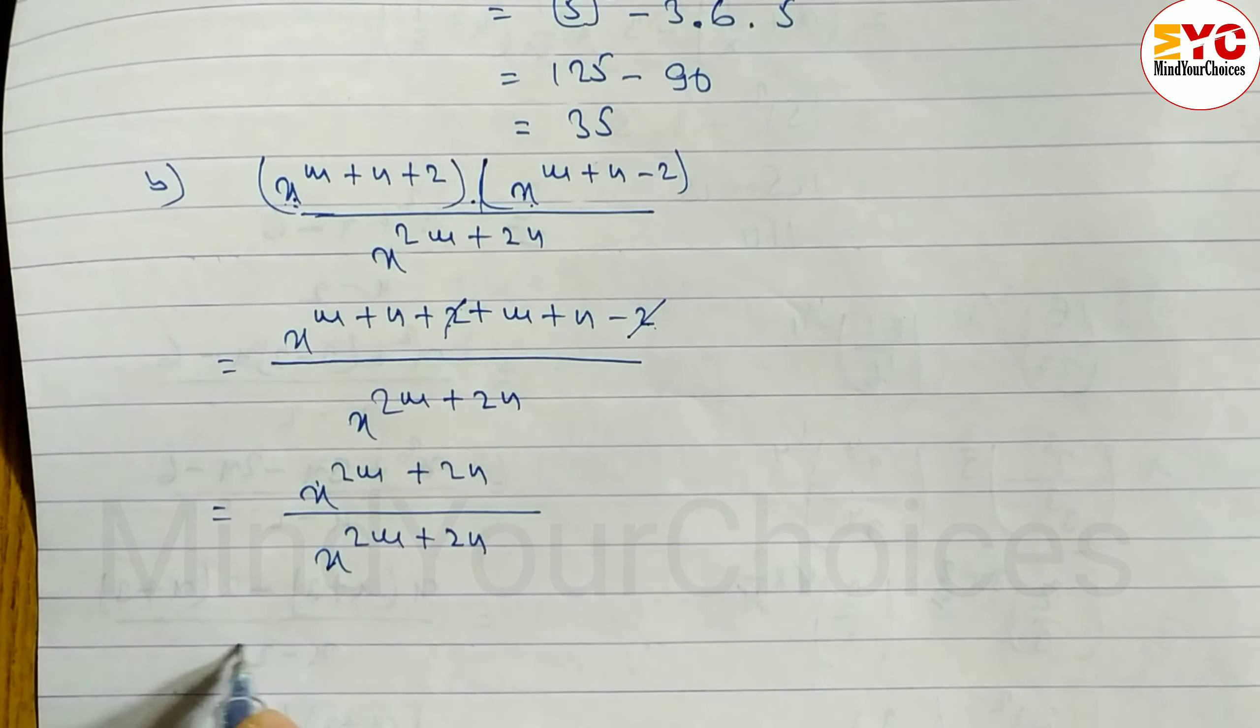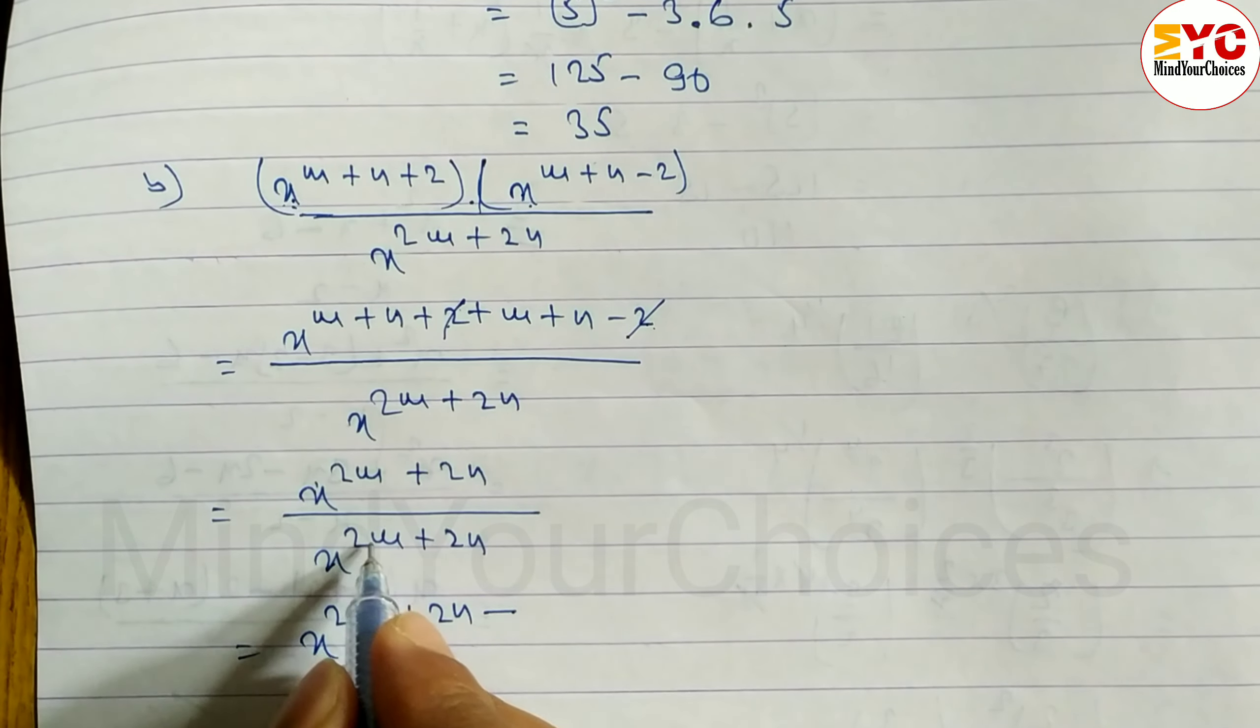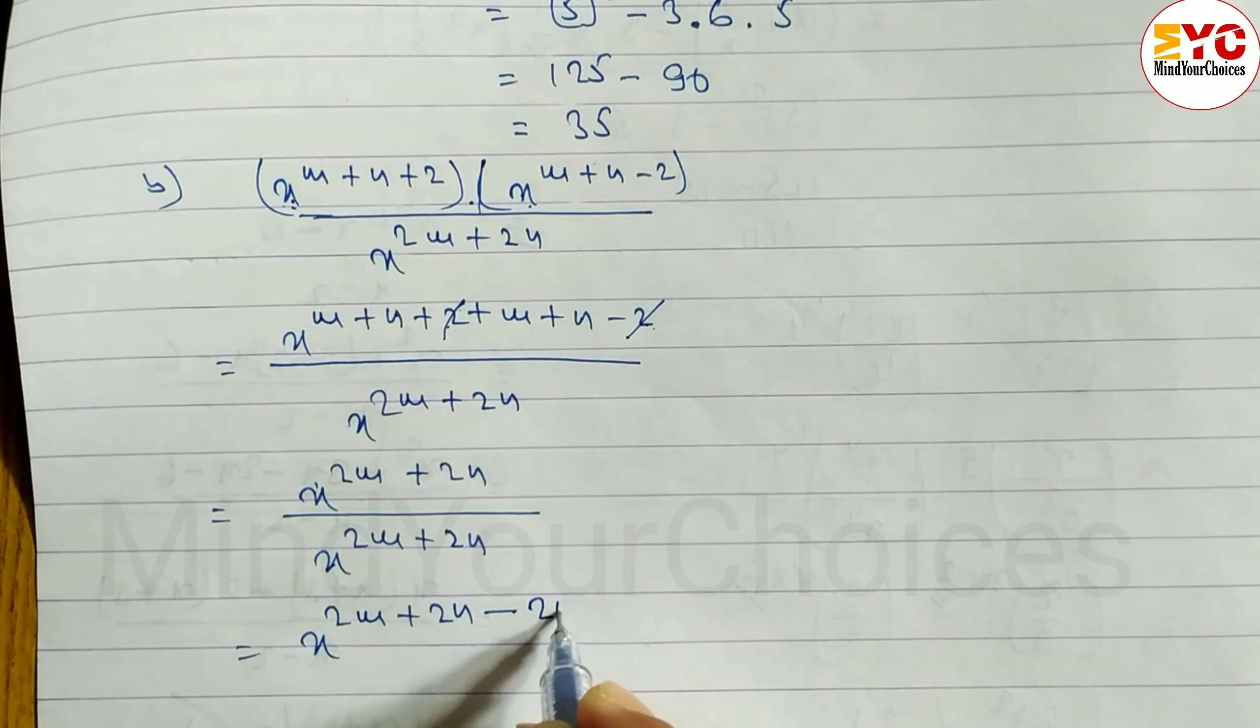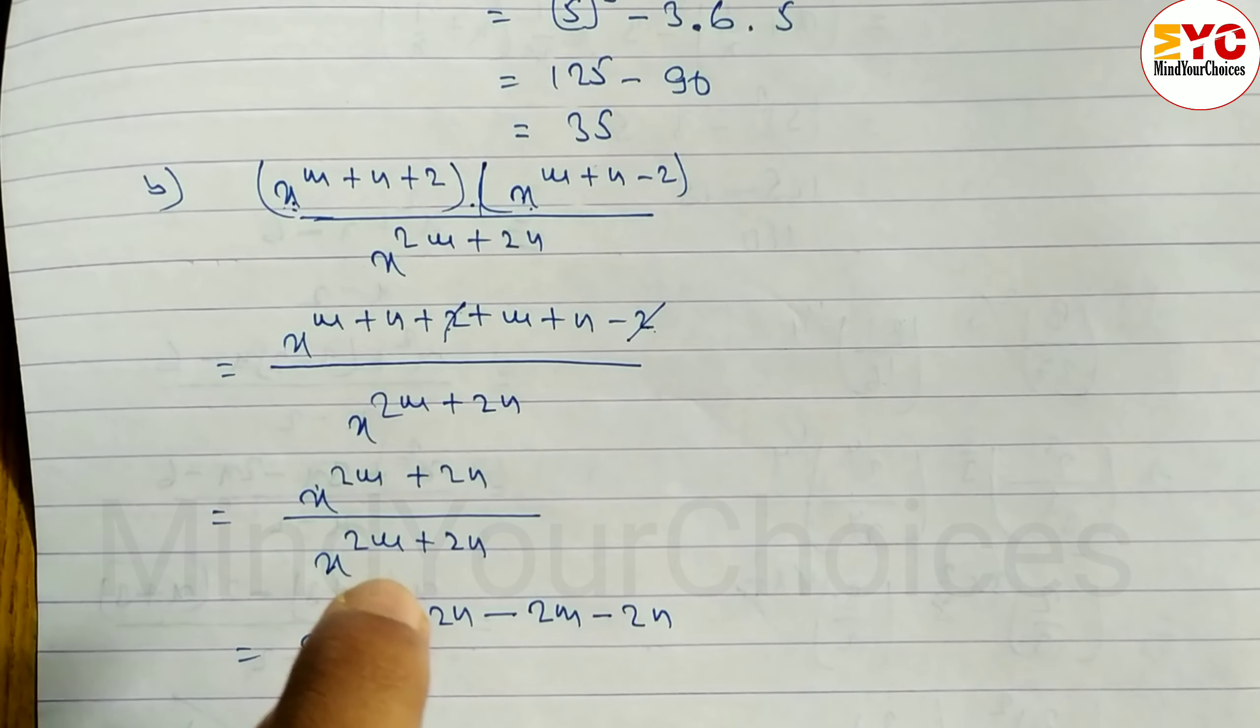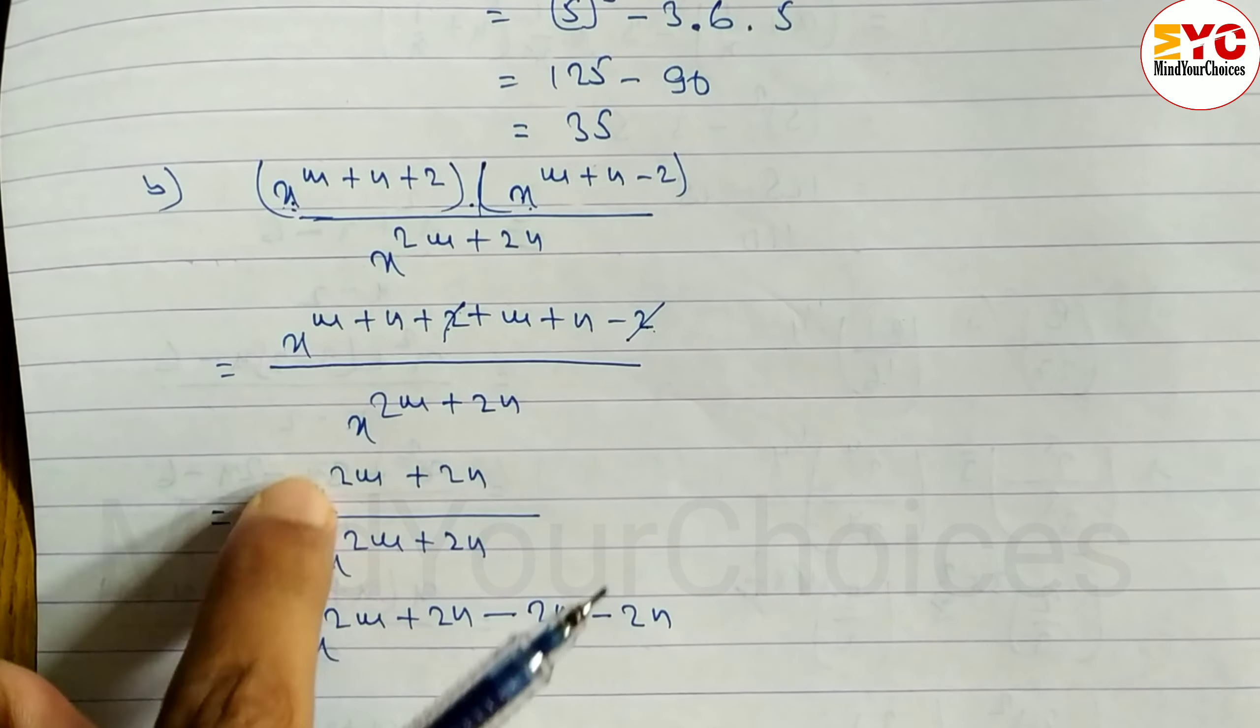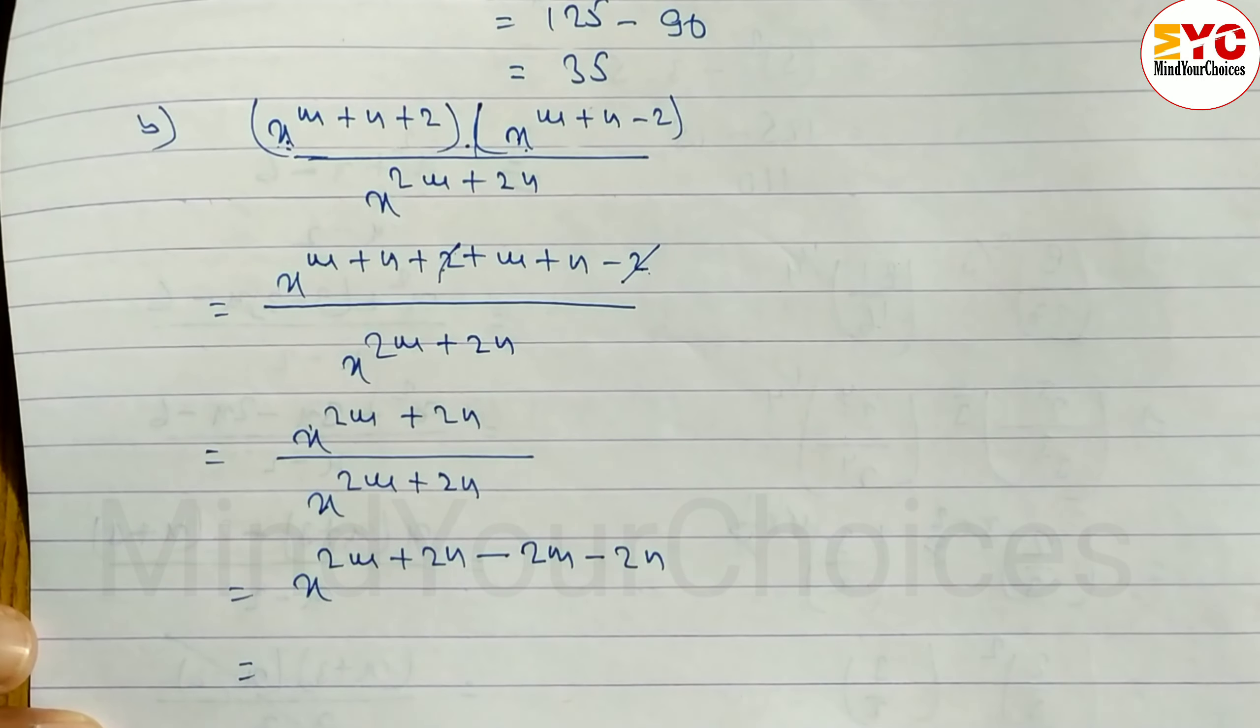Now you can see, base is same. In division, we subtract the powers. So x power 2m plus 2n minus 2m minus 2n. Base same, in divide, subtract the power.